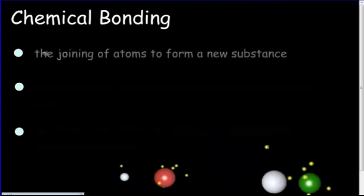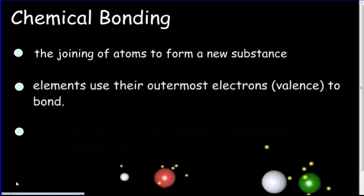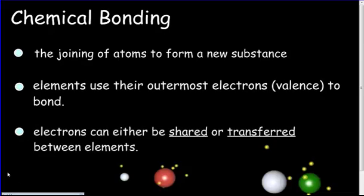Let's get into the definition of chemical bonding. Chemical bonding is going to be the joining of atoms to form a new substance. Elements are going to use their outermost electrons, which we know as valence, to help them bond. The electrons can either be shared or transferred between elements. So I'll show you a bunch of diagrams on how to know when they're going to be shared and when they're going to be transferred.